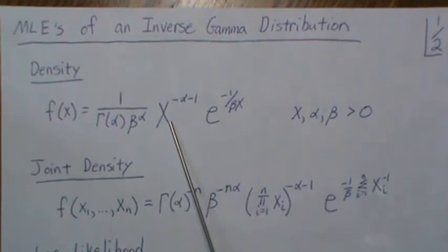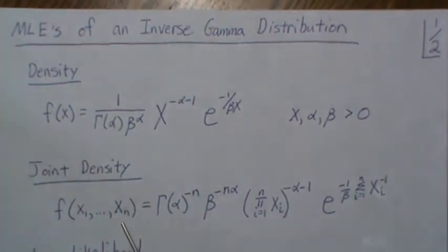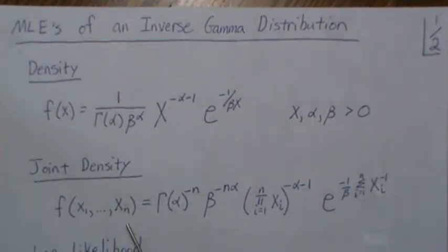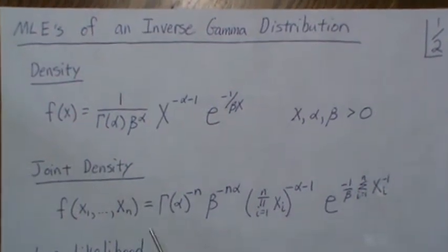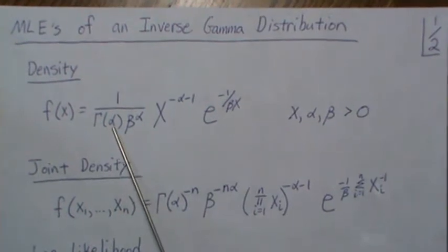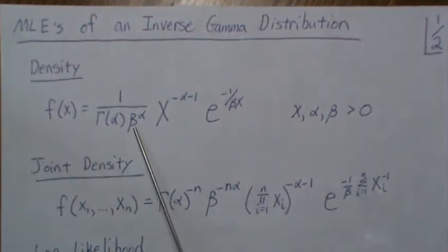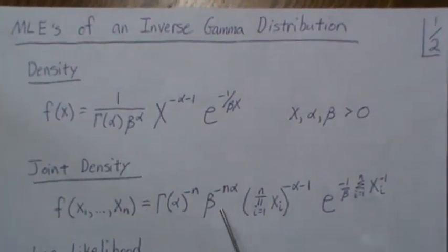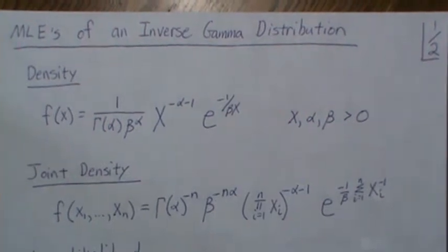Now the joint density for this is we take a sample of independent identically distributed random variables, and since they're all independent it's the product of this n times. So we get n of these, we get n of these, and since I take them to the numerator we make the sign negative.